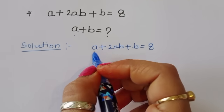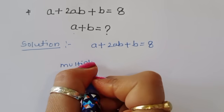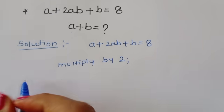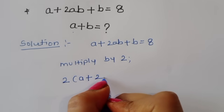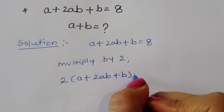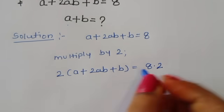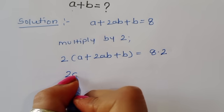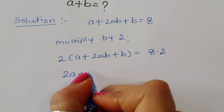We multiply both sides by 2. So 2 times (a + 2ab + b) equals 8 times 2, giving us 2a + 4ab + 2b = 16.